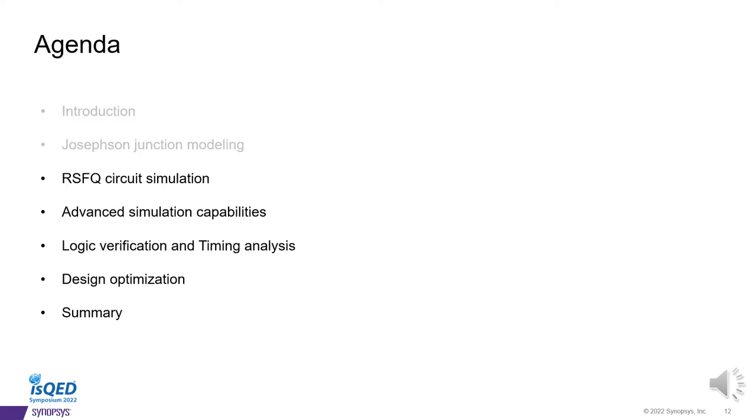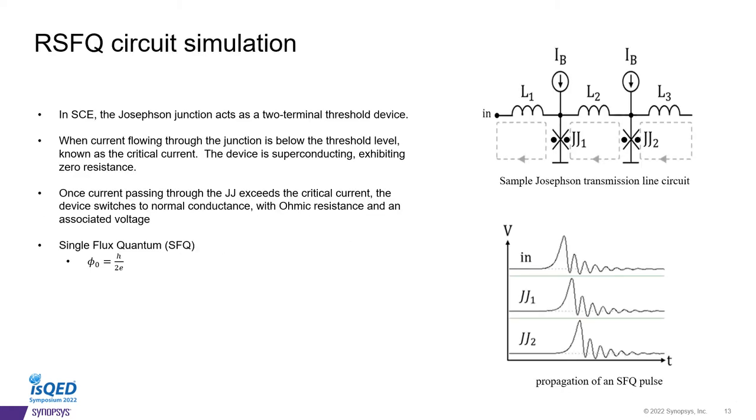Next slide will be discussing RSFQ circuit simulation and event simulation capability. This is the quick recap of the RSFQ circuit simulations before we talk about the event simulation capability. So it's similar to what Aaron already talked about. So for the Josephson junction here, in the top diagram, the cross represents active device. So it serves like more like a two terminal threshold device. In this example, we show how to propagate the SFQ from input to output. And when the current is smaller than the threshold, we call it critical current.